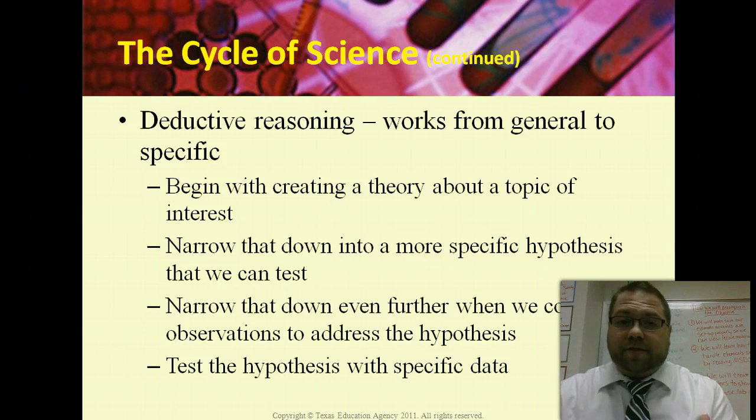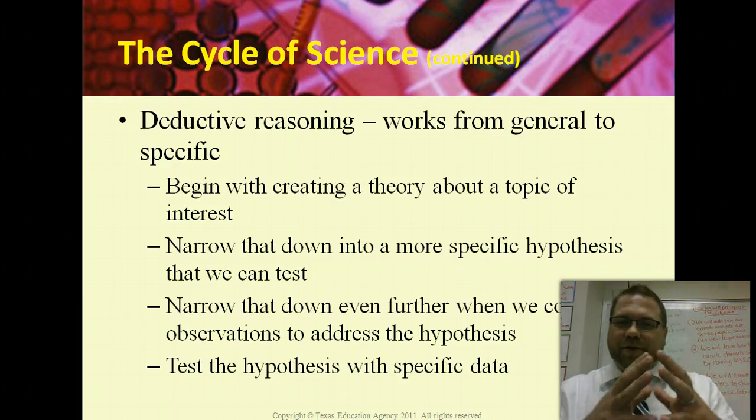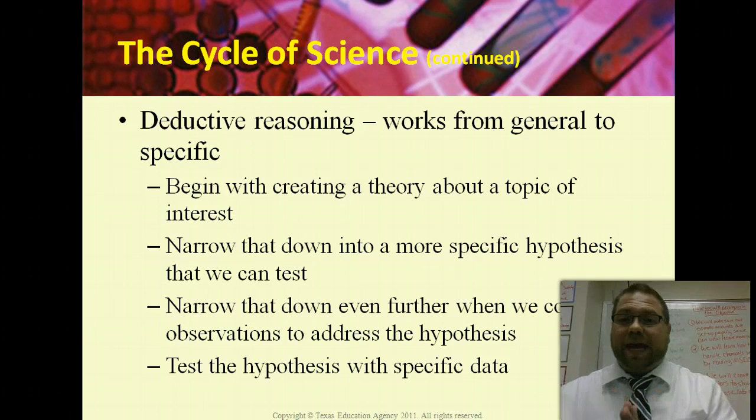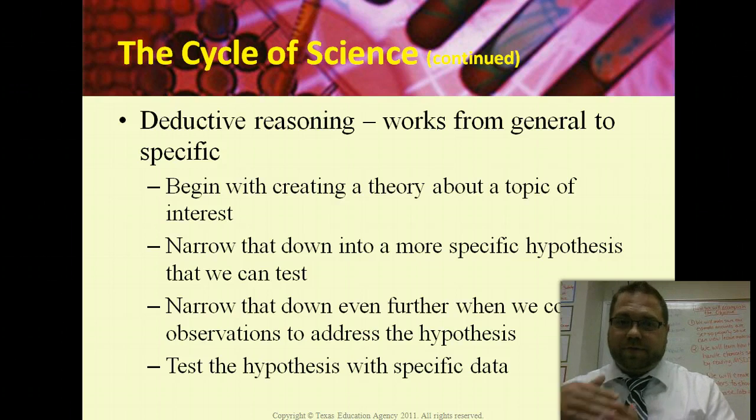Neon is a noble gas, therefore neon must be stable. And so deductive reasoning kind of comes in after you've done the experiment to be able to apply it to other things, but then you would still need to go and test and make sure that neon is stable and that that works. And so the process just keeps repeating over and over again.